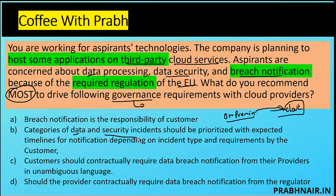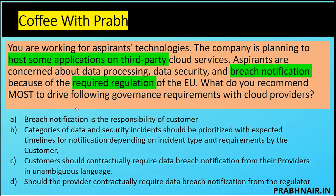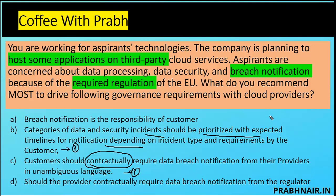Option B says category of data and security incidents should be prioritized with the expected timeline for notification depending upon the incident type as required by the customer. That makes sense — I'll park this option, because definitely all incidents cannot be responded to in the same timeframe. Option C says the customer should contractually require breach notification from the provider in unambiguous language. I'll park this option too, because contract is the third-party governance mechanism between customer and provider.